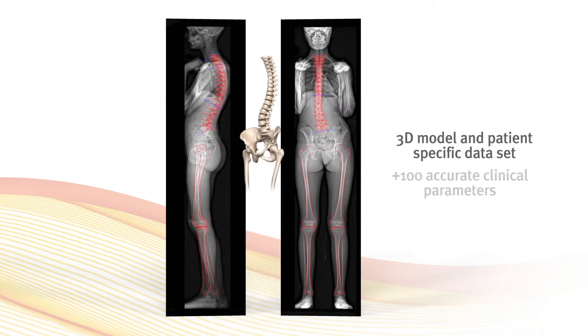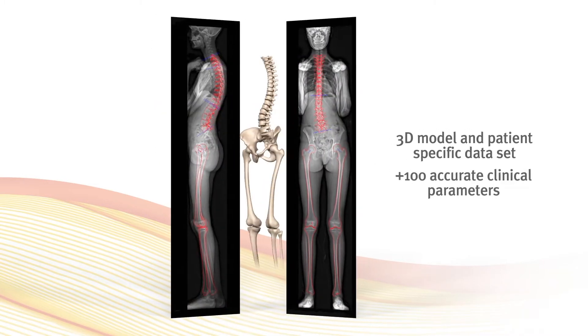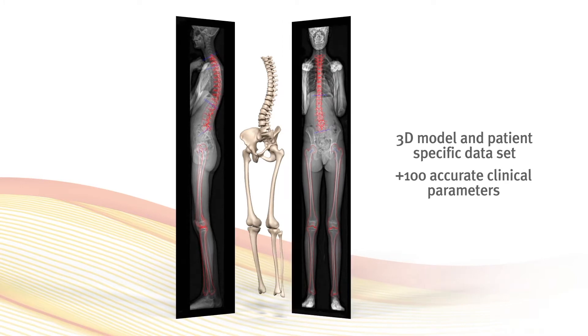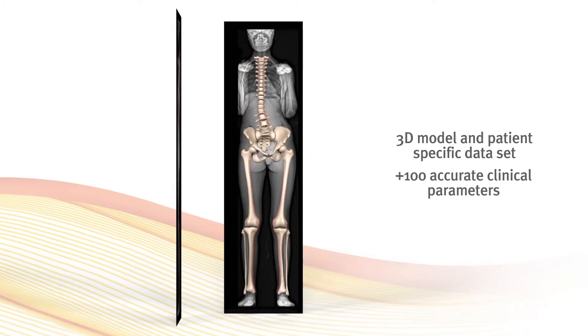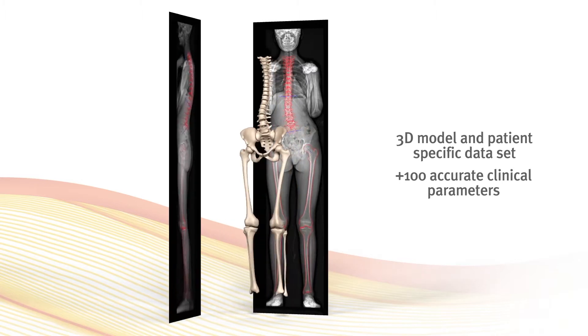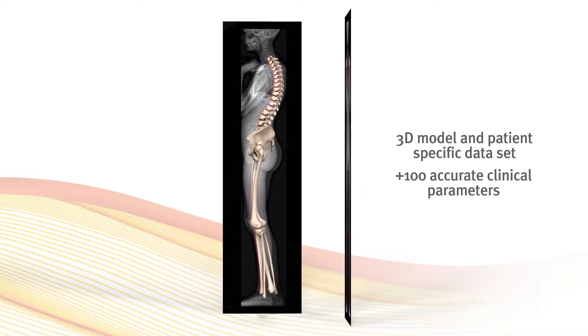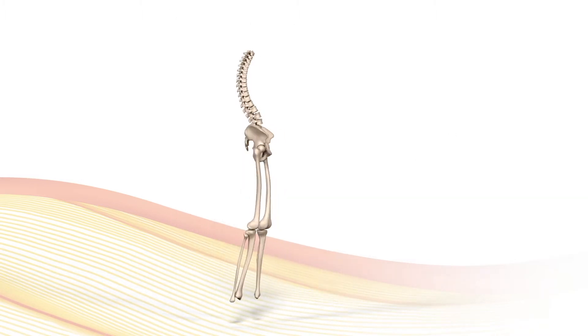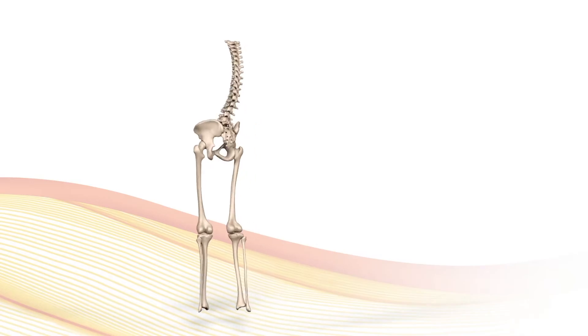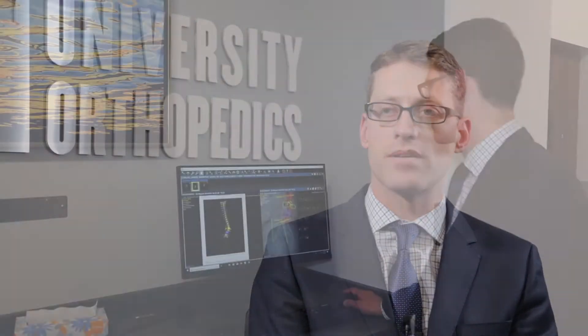The 3D models from EOS are extremely useful because you get a better idea of the patient's overall spinal alignment and also the exact nature of their deformity. There are rotational components to a spinal deformity — things called kyphosis and scoliosis — and it really helps to give the patient an idea of the nature of their deformity.